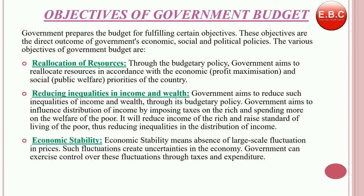Now we will go through the objectives of government budget. The government prepares the budget to fulfill certain objectives. These objectives are the direct result of government economic, social and political policies. The first objective is reallocation of resources. Through the budgetary policy, the government targets to reallocate resources as per economic priorities — that is profit maximization and also providing public welfare, which is considered to be the priority of every government.